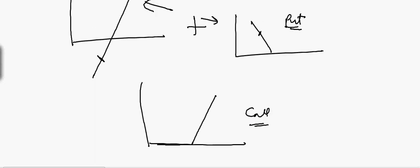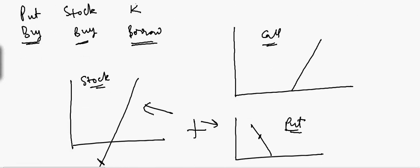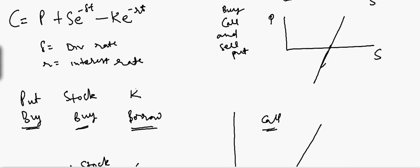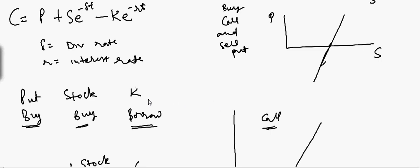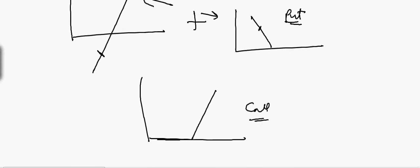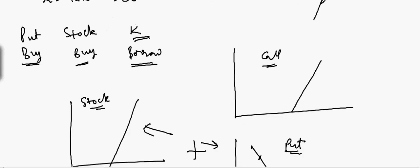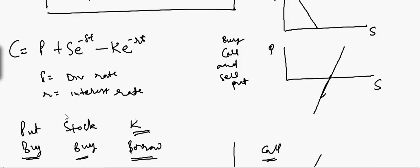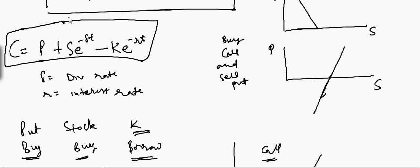However, you also have to account for the dividend and the money whose payment you are delaying. So in that case you have to borrow the money, because you have to pay the interest on this call option. This is how you create a synthetic call option. I hope this tutorial helped — see you later.